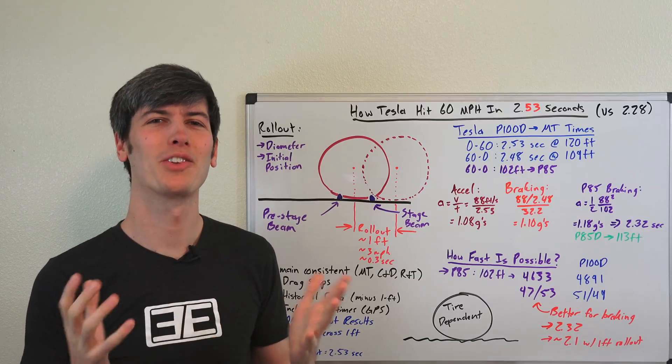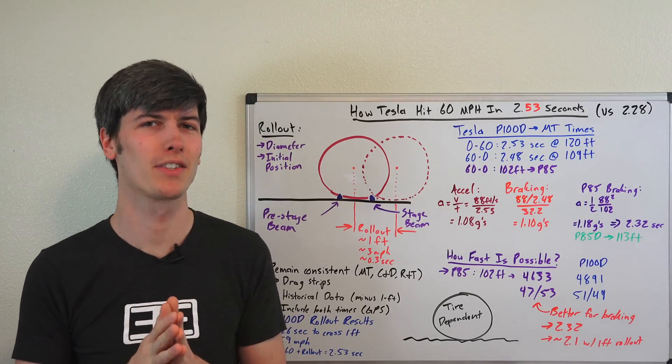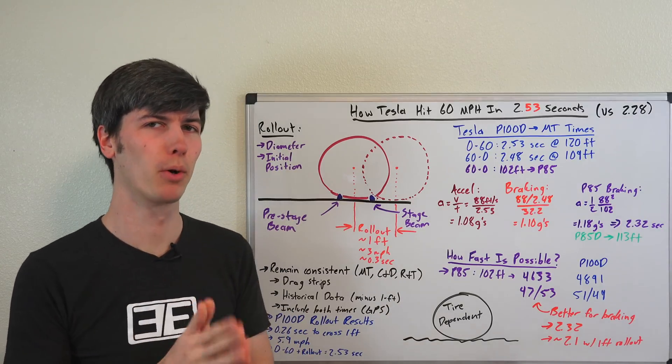Hello everyone and welcome. In this video, we're going to be talking about Tesla's 0-60 time of 2.28 seconds as measured by Motor Trend.